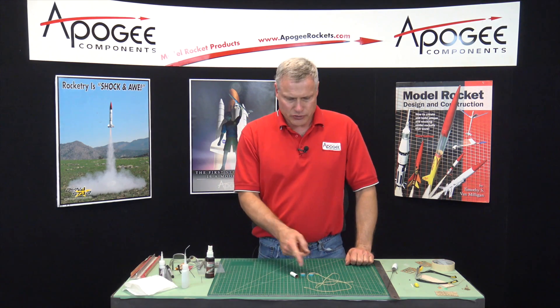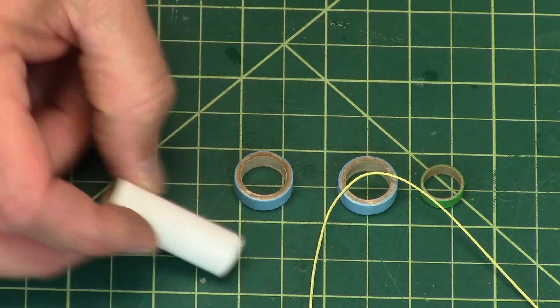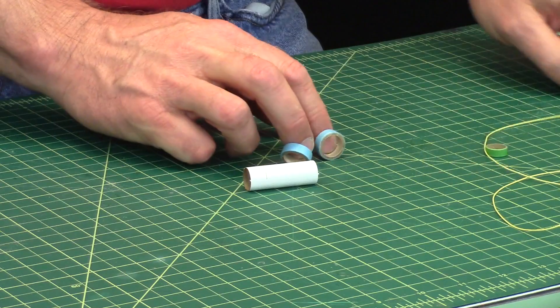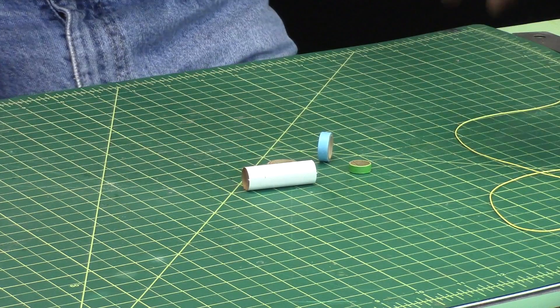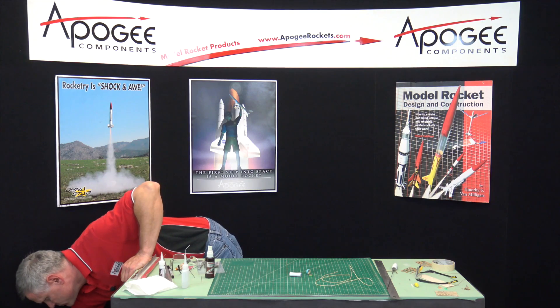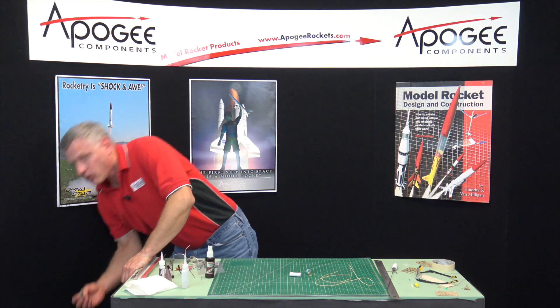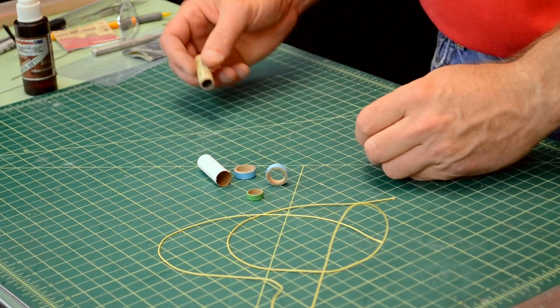From your parts assortment, take out the little white tube - this is the engine mount tube - the two blue rings, the little green ring, and the yellow Kevlar shock cord. You may also need a spent rocket motor to push things in.